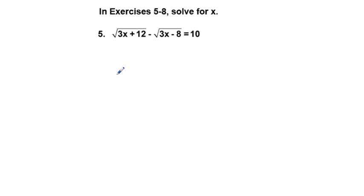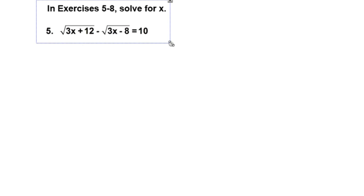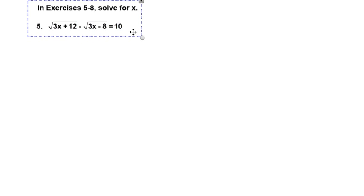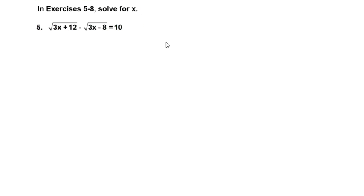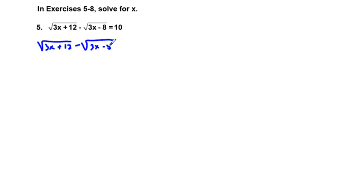Next, exercises 5 through 8 ask us to solve for x. Problems 5 and 6 are recommended to be solved without a calculator, and 7 and 8 with a calculator. For exercise 5, we have: square root of (3x plus 12) minus square root of (3x minus 8) equals 10. We're going to square both sides of this equation.